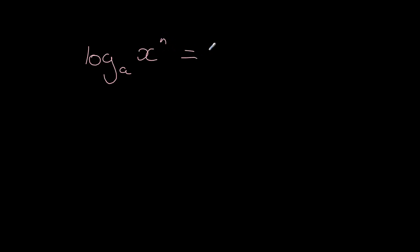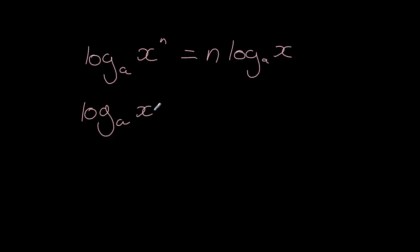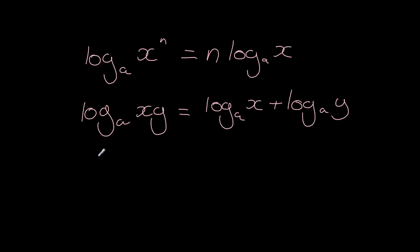So we've got our three rules. The power rule: log base a of x to the n equals n times log base a of x. The product rule: if we've got terms being multiplied, then that's the same as adding up the individual logarithms. And finally the quotient rule: if we're dividing, then that's the same as subtracting the two logarithms.